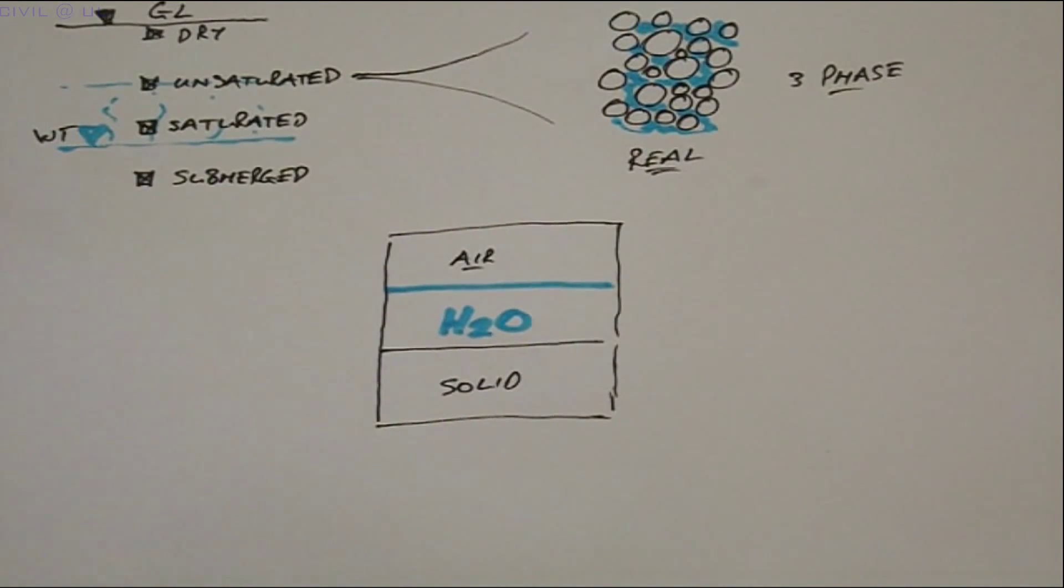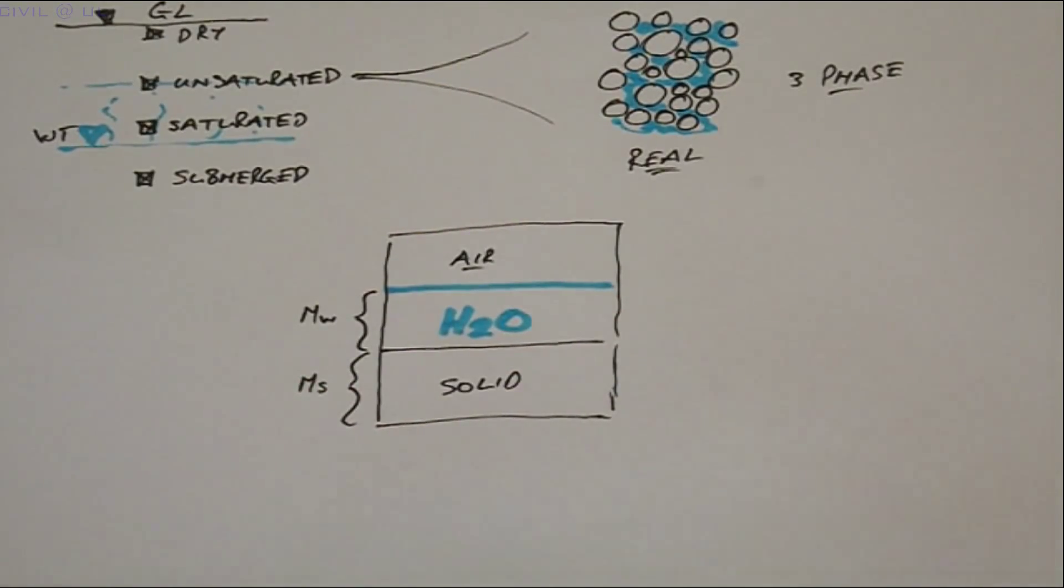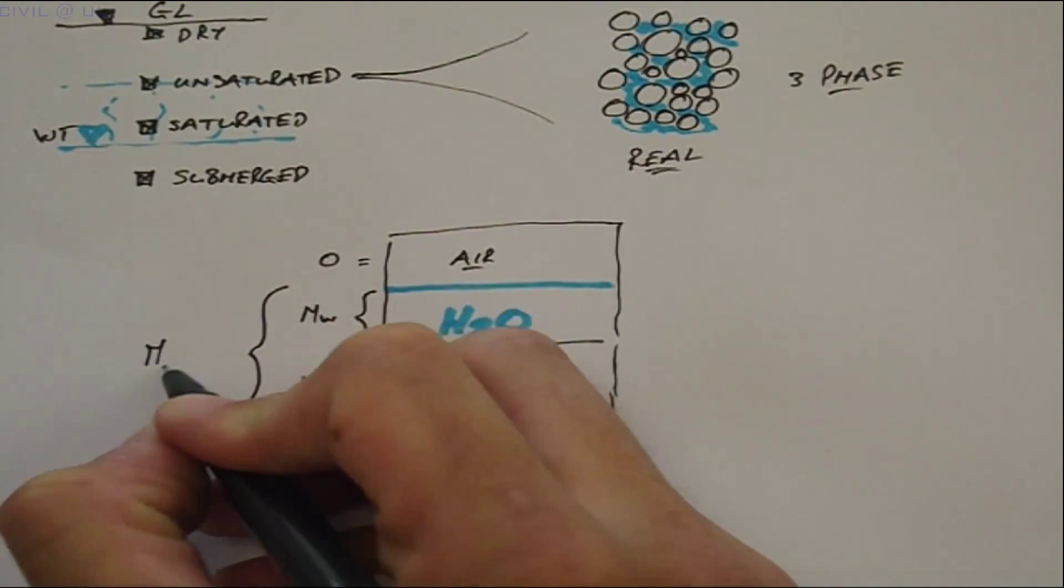We can represent the masses of each phase along the left hand side, with MS equal to the mass of solids, MW the mass of water. And since air has no mass, the total mass is given by adding MS and MW.